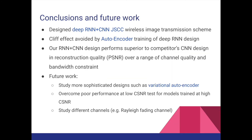In conclusion, we successfully designed a deep joint source channel coding algorithm for wireless image transmission using recurrent convolutional neural networks. We can avoid the cliff effect using the auto-encoding training procedure in deep learning, and we show that our architecture can perform better than the competition's purely convolutional design over a range of channel quality and bandwidth constraints.